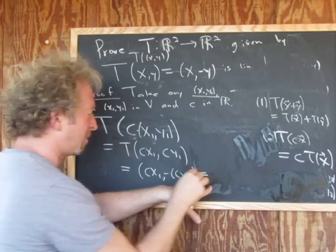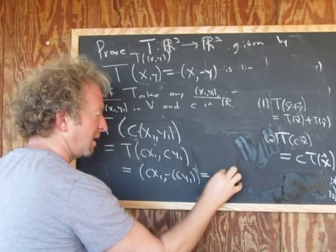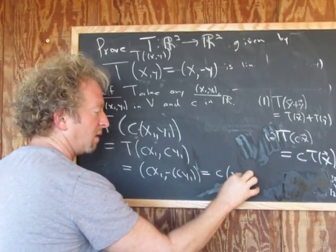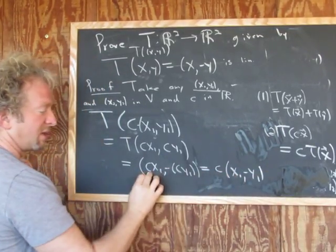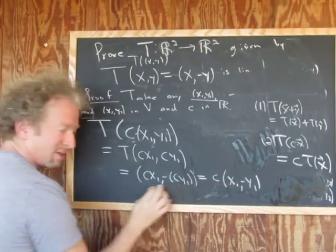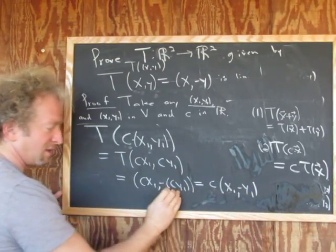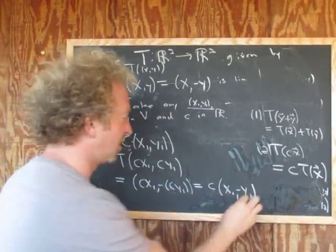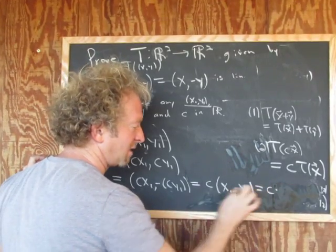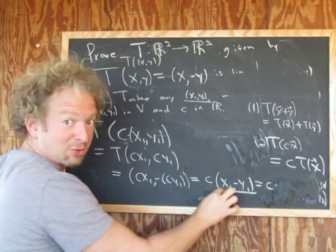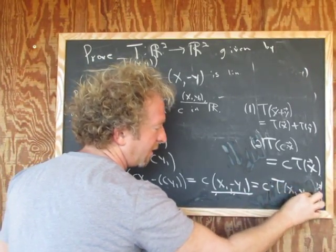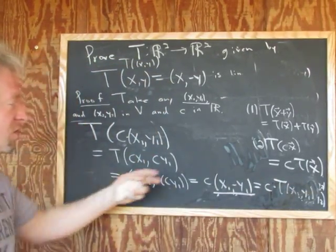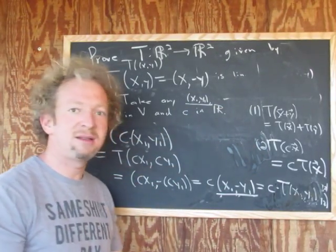And I guess now you can pull out the C. This is CX1. Skipping some steps here. Negative Y1. And because C times this is this. C times this is this, right? C times X1 is this. And then C times this guy is just this. So this is C times, and this here is T of X1, Y1. So T of X1, Y1. And that shows the second condition. So we show both conditions, and it's a linear transformation.